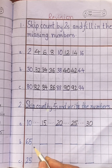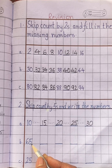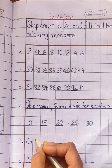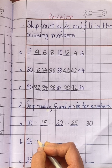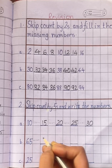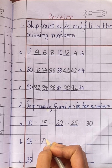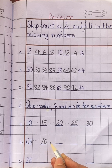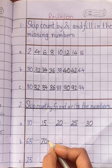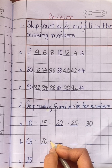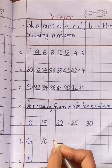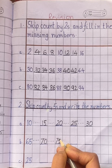The next number is 65. We have to skip four numbers: 66, 67, 68, 69. Write down 70. After 70, skip four numbers: 71, 72, 73, 74. Write down 75.